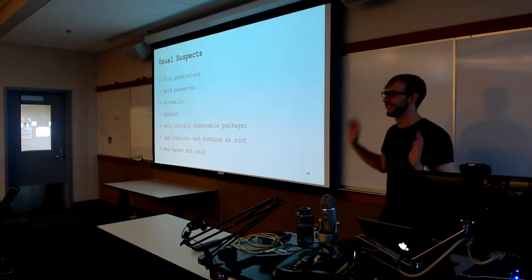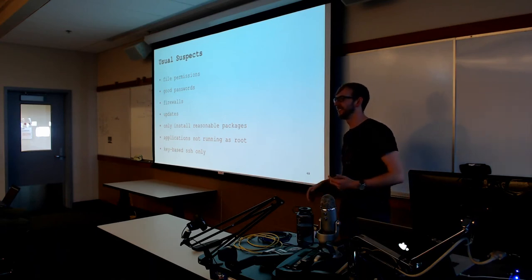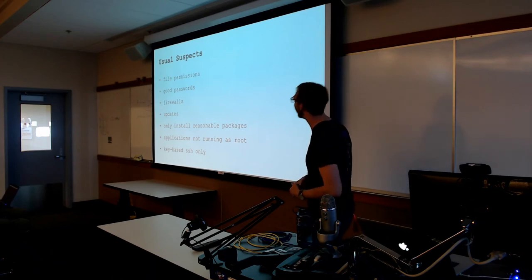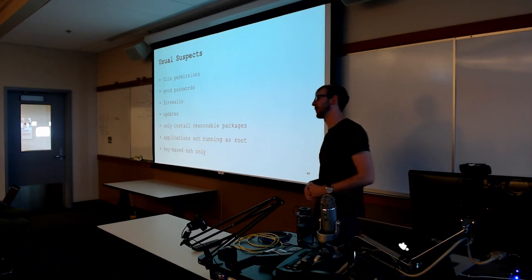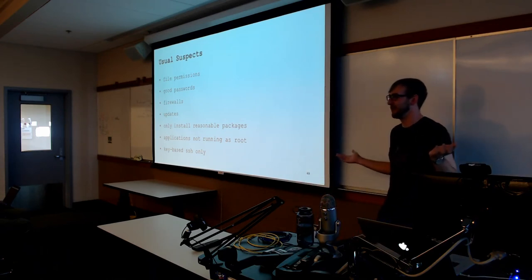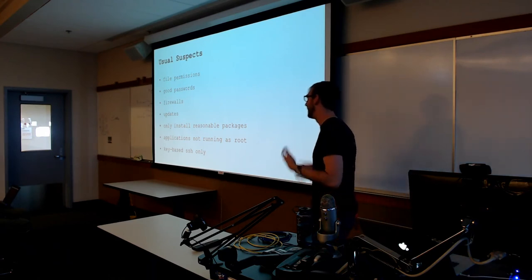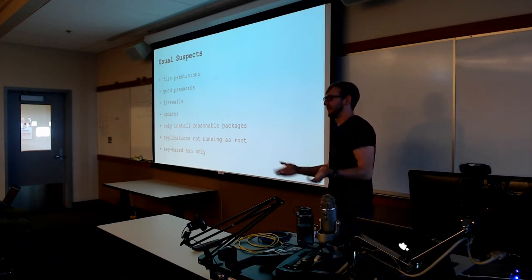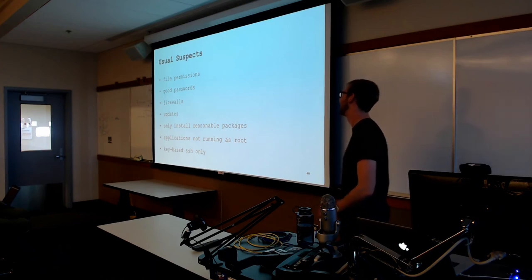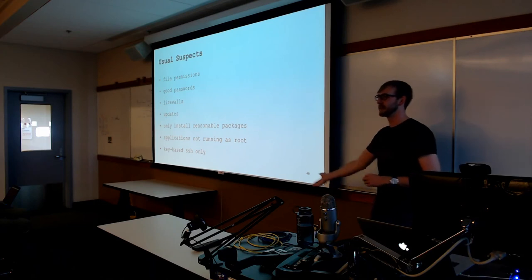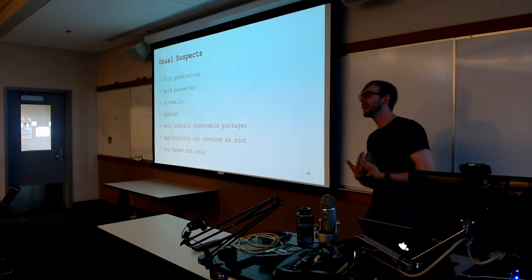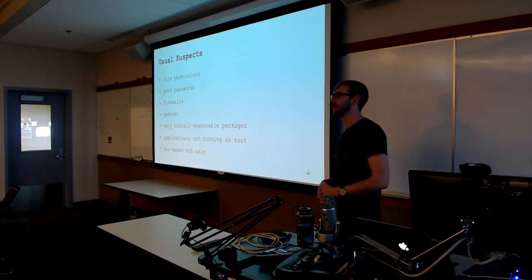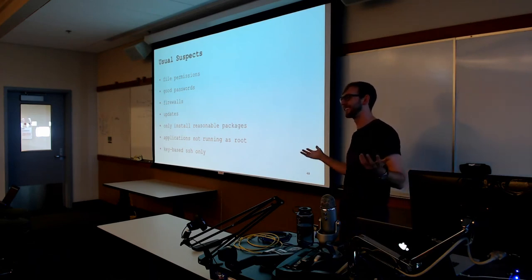We'll quickly cover the normal stuff you do to harden Linux. Make sure your file permissions are locked down — if you see 777, question whether it needs to be. Good passwords — if someone can rip /etc/shadow and crack all your passwords, that's a bad time. Check your firewalls — opening the world is a bad place to be. Make sure everything's updated, all packages current. Make sure your applications aren't running as root. Even in modern pen tests, people run services as root because they don't realize there's a more granular way to run those services without giving full root access.